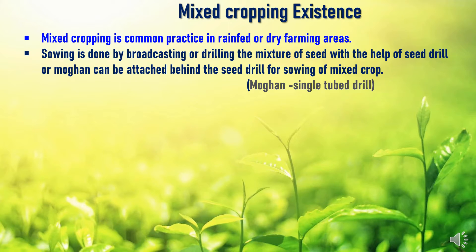Rain-fed agriculture is a type of farming that relies on rainfall for water, and it provides much of the food consumed by poor communities in developing countries. In the case of mixed cropping, sowing is done by broadcasting or drilling the mixture of seeds using a seed drill, or a mogan — a single-tube drill used in different areas — attached behind the seed drill for sowing the mixed crop.